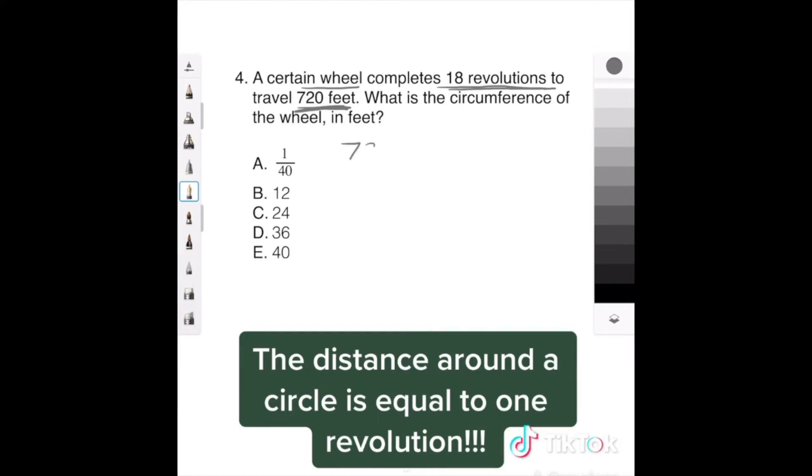So if we take 720 feet and divide it by 18 revolutions, it actually comes out neat. 720 over 18 is 40.